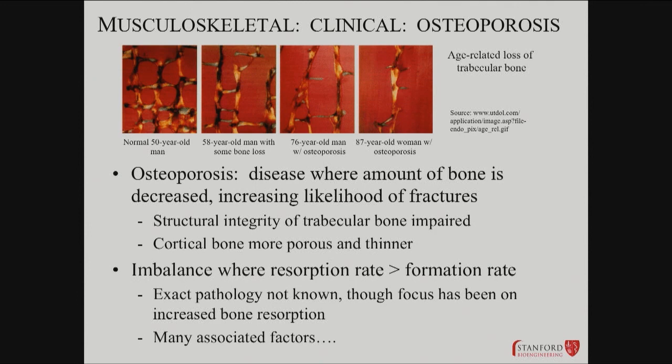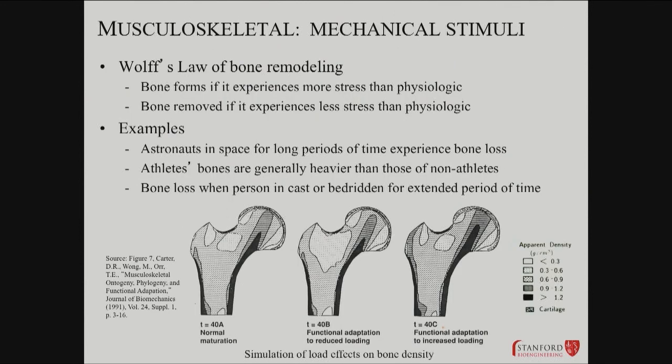There are pathological cases, separate from age, where resorption rate can be greater than formation, with mineral deficiencies being among the most common. Bone remodeling relates to the tennis player question — there's Wolf's Law, which states that bone will form if it experiences more stress than physiologic, or be removed if there's less stress than physiologic.